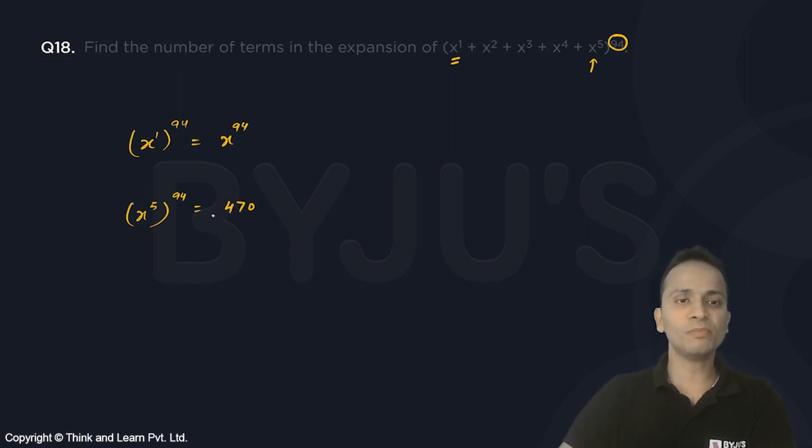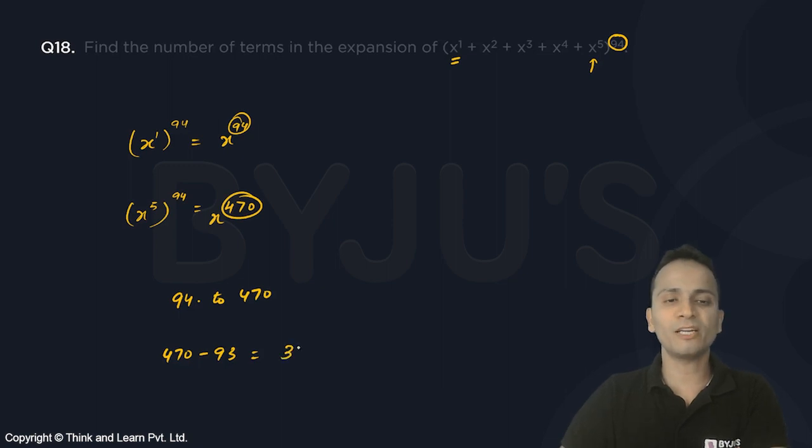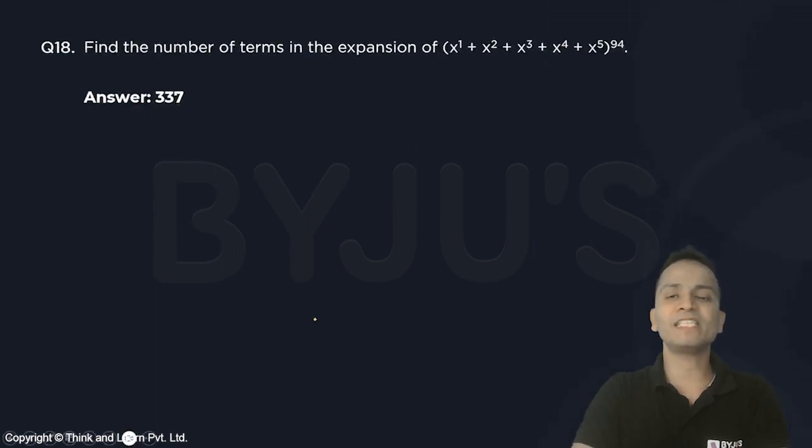So starting from 94 up till 470, we just need to count the number of integers from 94 up till 470. The answer will be 470 minus 93, which comes out to be 377. So there will be 377 terms in the expansion, so the answer is 377.